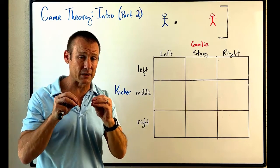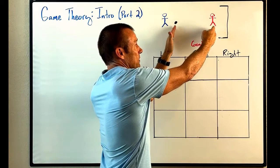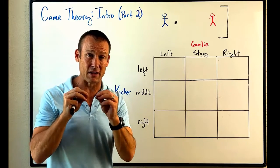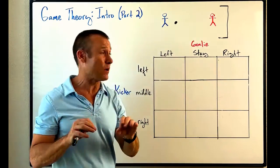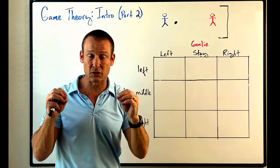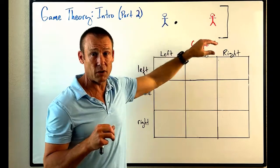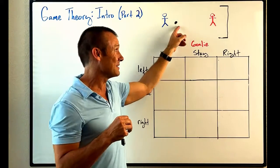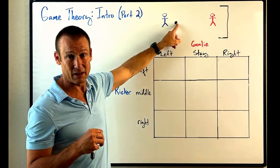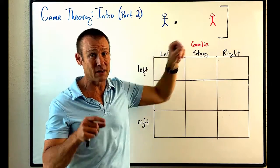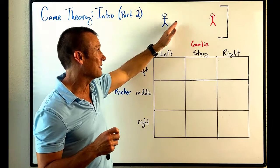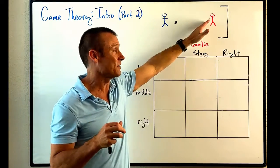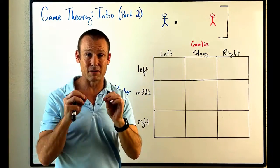This is a simultaneous play game. The reason is that the distance between the ball and the goal is very short, so both players have to execute their strategy at the same time. The goalie cannot wait until the kicker kicks the ball and then jump — they won't get there in time. So the kick and the jump happen simultaneously; or the goalie can choose to stay in the middle.